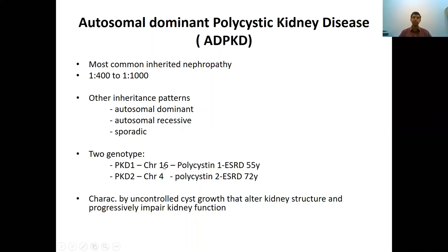In autosomal dominant polycystic kidney disease, there are two genetic abnormalities that can mainly occur. One is on chromosome 16, which is the PKD1 gene, and on chromosome 4, the PKD2 gene. These are two numbers you need to know because for your MCQs, they sometimes can give this chromosome number.